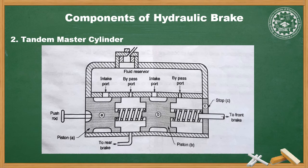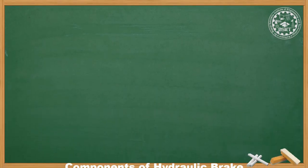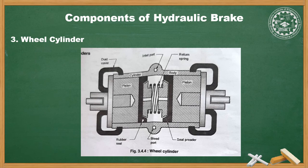The tandem master cylinder is useful when the braking system at either the front or rear fails. The third component is the wheel cylinder. In drum-type brakes, each wheel has a wheel cylinder with two pistons. Each piston is linked to a brake shoe by an actuating pin, or the end of each shoe rests on the piston. Components include rubber cup, cup spreader, spring, and dust cover.